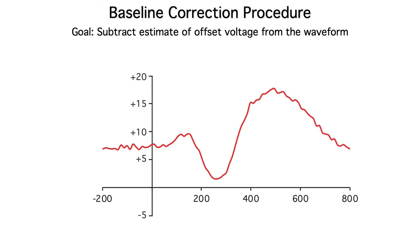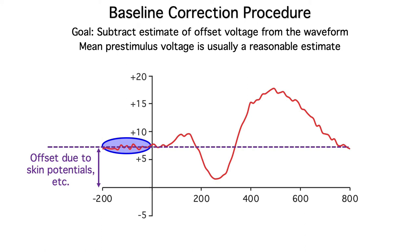Here's an example. You can see a small offset due to skin potentials, etc. We start with the assumption that the voltage immediately prior to the stimulus is a good estimate of the offset, although it also contains some random EEG noise. If we take the mean voltage over the 200 milliseconds prior to the stimulus, most of the random EEG noise will average out, and we'll be left with a reasonable estimate of the offset.